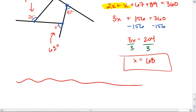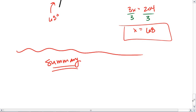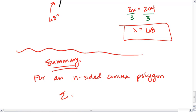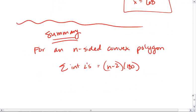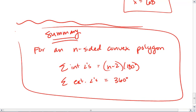So quick summary. For an n-sided convex polygon, the sum of the interior angles is n minus 2 times 180. The sum of the exterior angles is 360 degrees. And those are the only 2 equations you have to know.